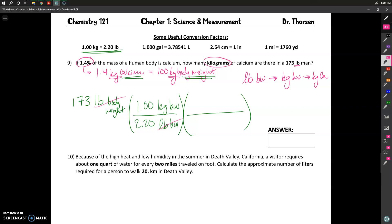And I can use that on the next conversion factor with the goal being to cancel out kilograms of body weight and to end up with the kilograms of calcium. So the numbers I have are going to be 1.4, which is associated with the kilograms of calcium, and 100 on the bottom, which is associated with the kilograms of body weight.